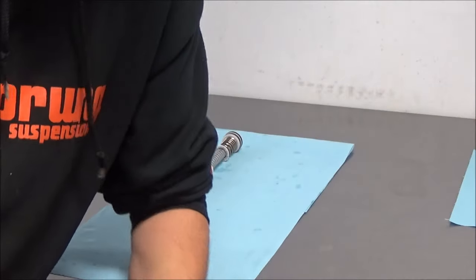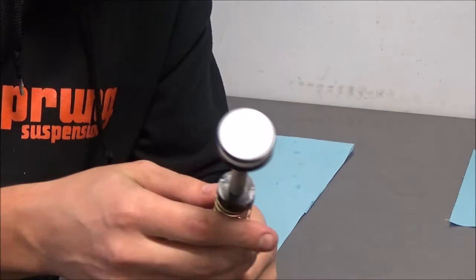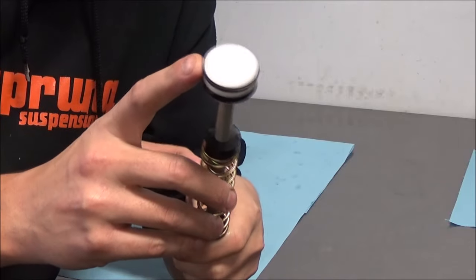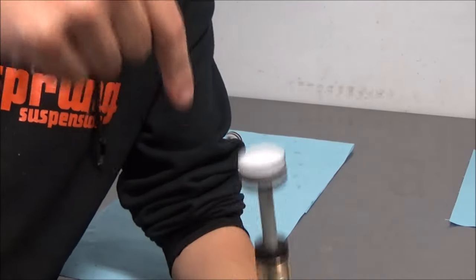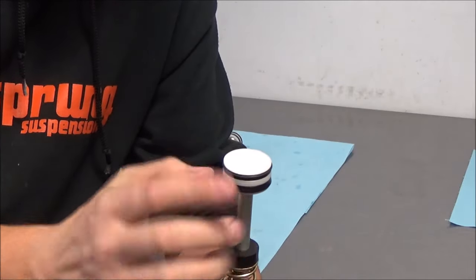And anyone who's owned the first generation float air springs will attest to this - these U-cups are a very good one-way seal. They are very good at sealing pressure that's pushing down the air pressure. They're not so good at scraping the oil off the inside of the stanchion.